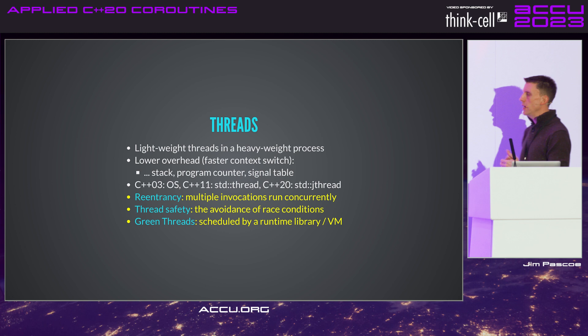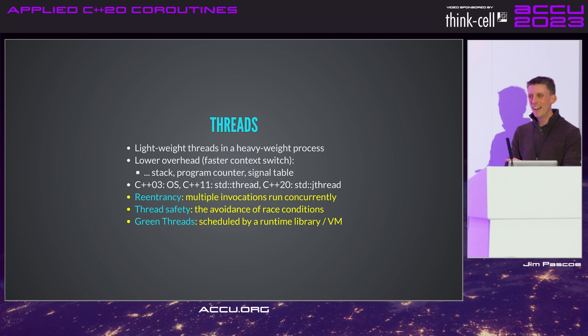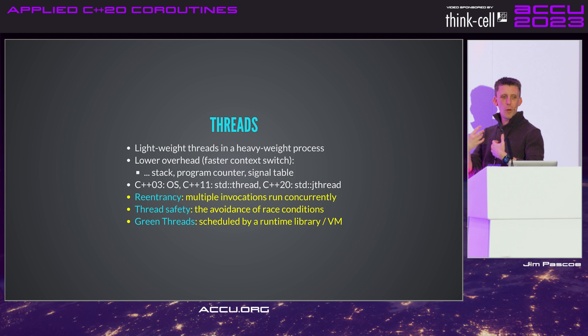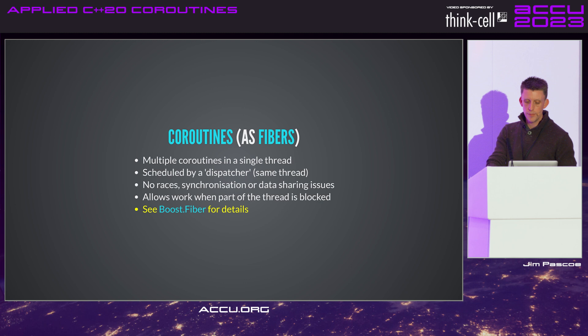Green threads are threads scheduled by a runtime library or virtual machine. The name comes from Java — early JDK 1.1 had a cooperatively scheduled threading model from JDK 1.1 to 1.3, after which they moved to OS threads. The name has stuck and now refers to any group of threads scheduled by a runtime library or VM.